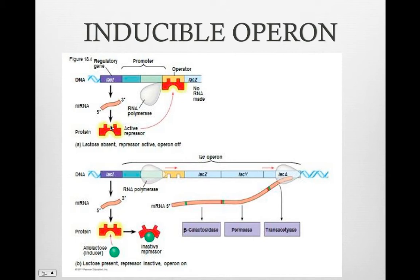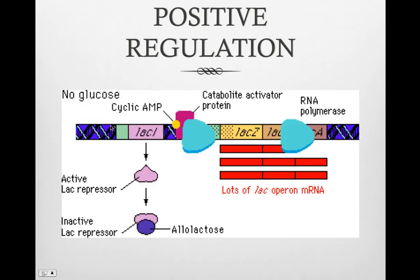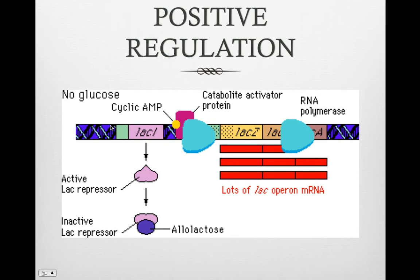Co-repressors and inducers are negative regulators. E. coli prefer glucose to lactose. Only when glucose is unavailable is the lac operon turned on. They sense the quantity of glucose because a small molecule, cyclic AMP or cAMP, builds up when glucose is low. cAMP binds to the regulatory protein CAP, catabolite activator protein, which is an activator, and activates it. It attaches to DNA, and this causes the RNA polymerase to start transcription. This is an example of positive regulation. When glucose is high, cAMP is low, which stops transcription. The combination of positive and negative regulation controls gene expression in prokaryotes.